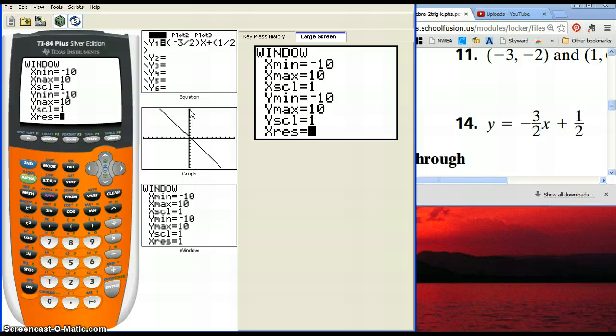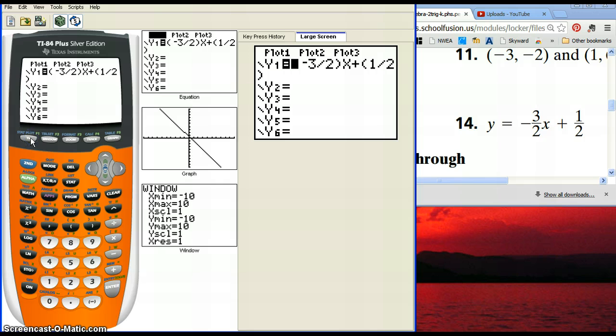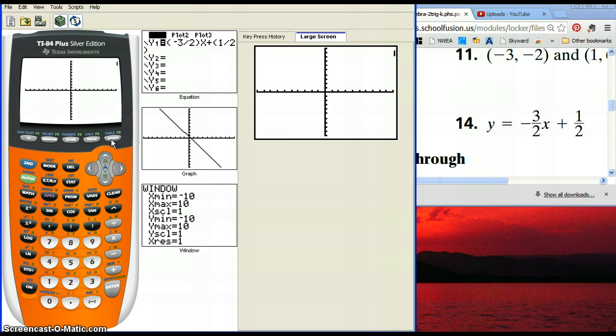We never change this x resolution. The window button allows you to change what you're viewing. And that becomes important depending on what data you are collecting. But any time you want to graph an equation, you just always have to get Y by itself, just like this equation. And then you can type it right into your Y equals, and you can press graph.